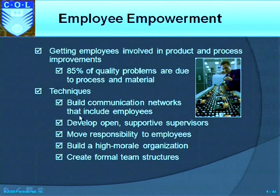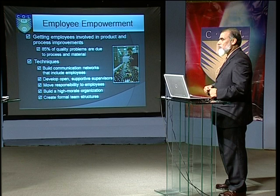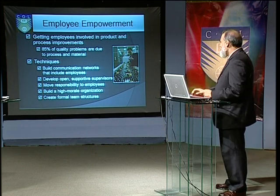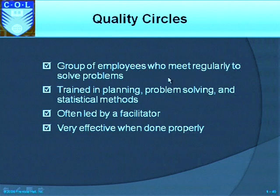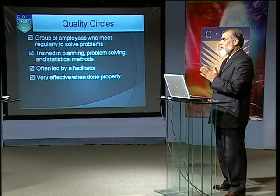Techniques for employee empowerment include: build communication networks that include employees; develop open and supportive supervisors; move responsibility to employees — give them responsibility; build a high-morale organization where everyone is proud of their work and their organization; and create formal team structures. Quality circles are groups of employees who meet regularly to solve problems, trained in planning, problem solving, and statistical methods, often led by a facilitator. Quality circles are an effective way to involve and empower employees in quality improvement.